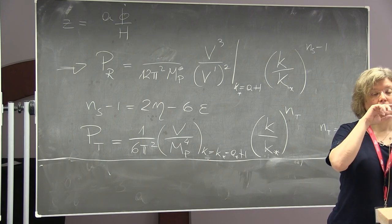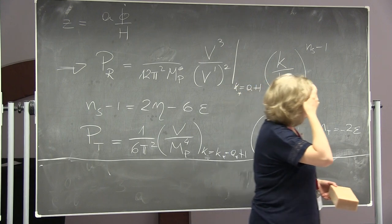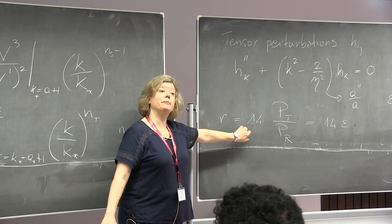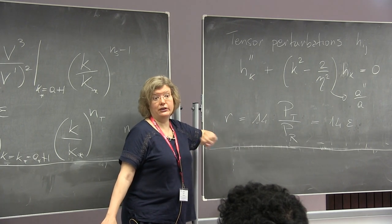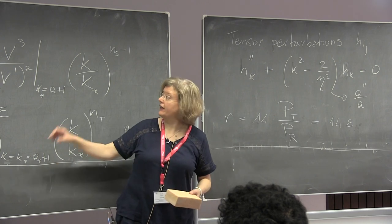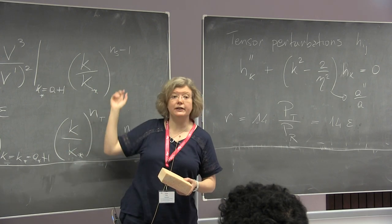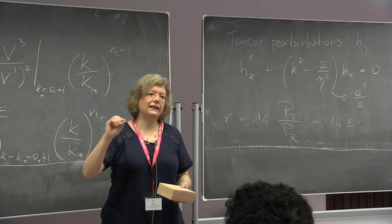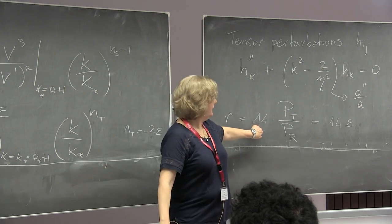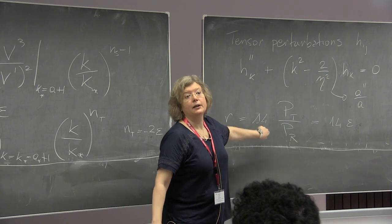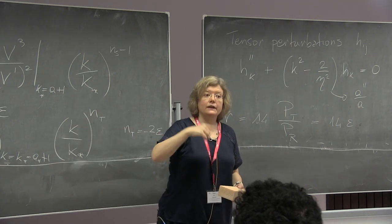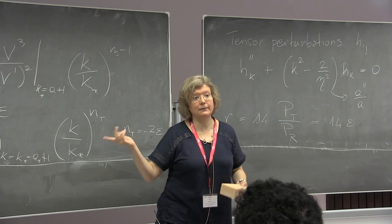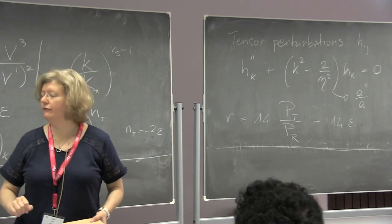Question: Is there any reason for the factor of 14 in the tensor-to-scalar ratio? The factor of 14 is connected to the transfer function of the two power spectra, and is valid for the CMB at a particular scale where you define r. They have a slightly different k-dependence. One particular scale has been chosen, and at that scale this ratio comes from the transfer functions. Because this power spectrum must then be transferred into the behavior of the CMB, giving an additional dependence on wavelength.